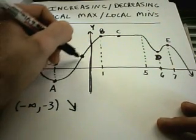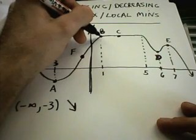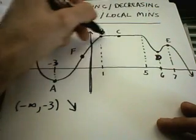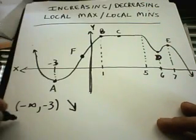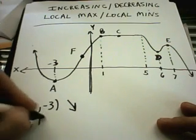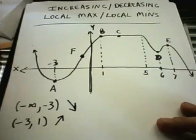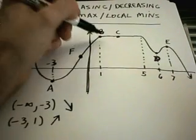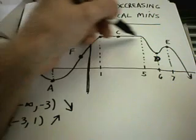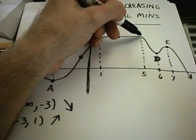Notice from negative 3, it's getting bigger up to 1. And suppose that this little part is a flat line. So from negative 3 to positive 1, we would say the function is increasing. From 1 to 5, if this is a flat line, the function is remaining constant.